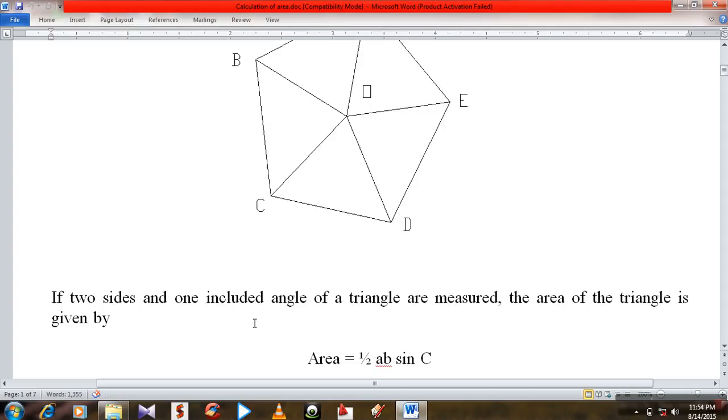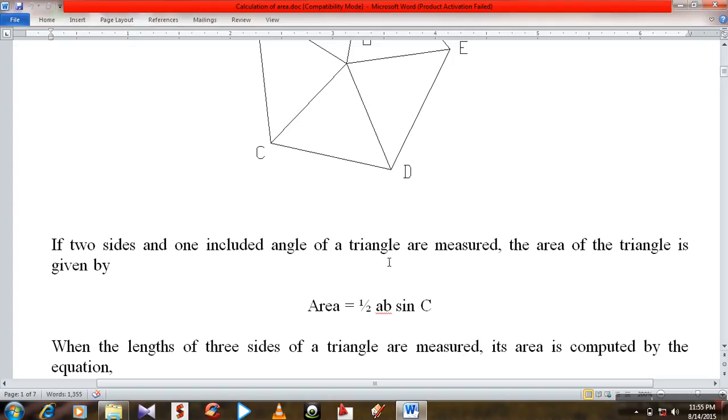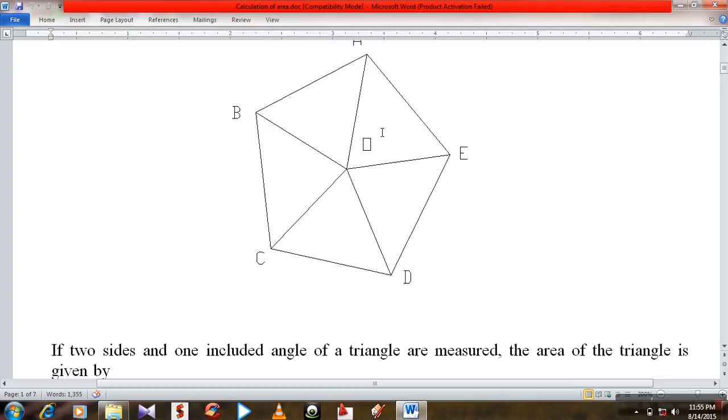If two sides and one included angle of a triangle are measured, the area of the triangle is given by area equals half a b into sin c. That means two arms of the triangle a and b. Let here is the arm a and here is the arm b.